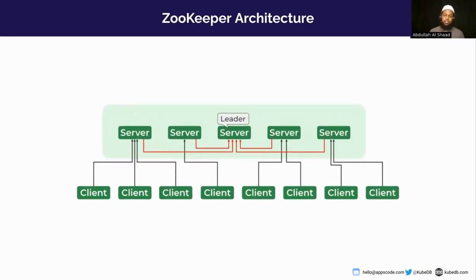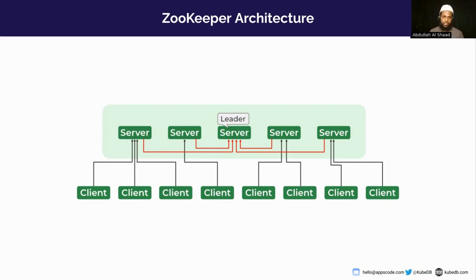Here is the basic ZooKeeper architecture. You can see there are five servers — among them one is the leader and the others are followers. A client can connect to any of the servers. When a client writes to a server, the data is forwarded to the leader, and the leader is responsible for synchronizing the data across all other members of the ensemble so that all servers have the same data set.